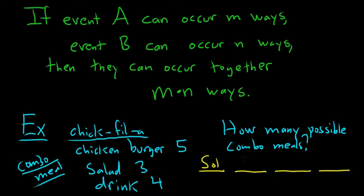There are five ways to perform the first step in the construction process of a combo meal. Five ways to pick a chicken burger. There are three ways to perform the second step, because there are three salads. And there are four ways to perform the last step. So the number of possible combo meals is the product of the number of ways required to perform each individual step.